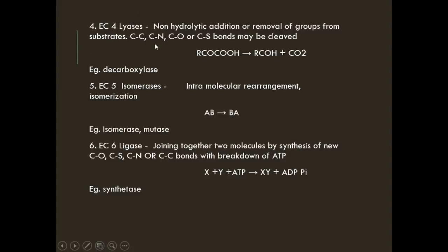EC4, lyases, involve non-hydrolytic addition or removal of groups from a substrate — water is not involved. For example: RCOOH → RCOH + CO₂, where carbon dioxide is removed. Example: decarboxylases. EC5, isomerases, catalyze intramolecular rearrangements — isomerization. The reaction is AB → BA, where the structure is rearranged within the molecule. Examples are isomerases and mutases.